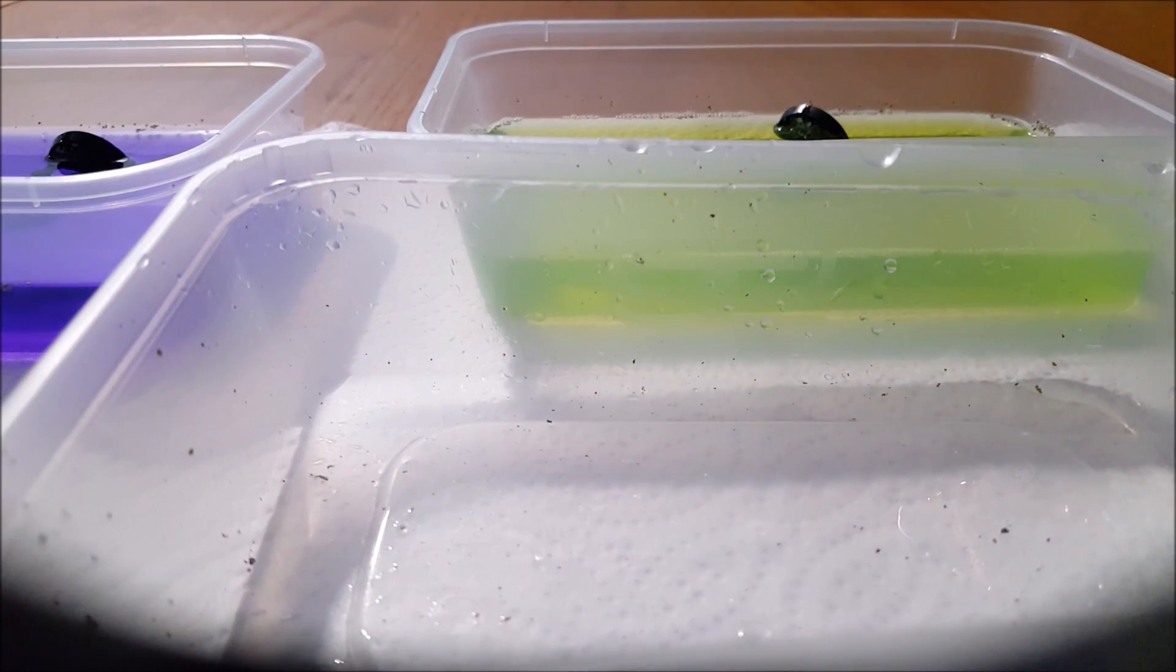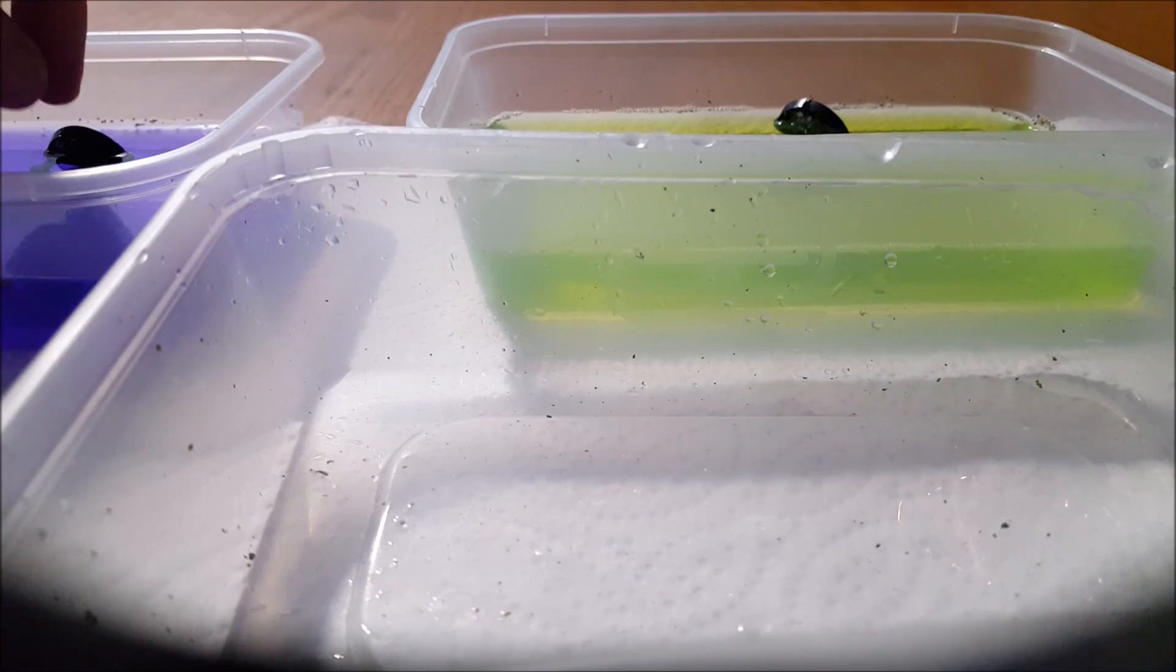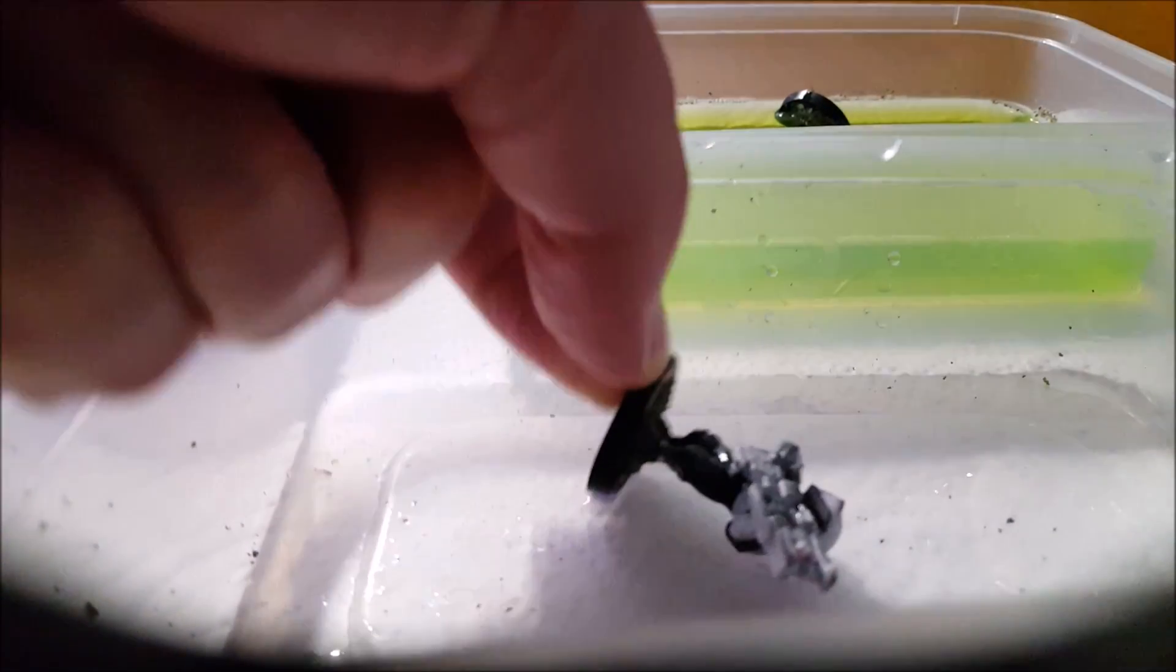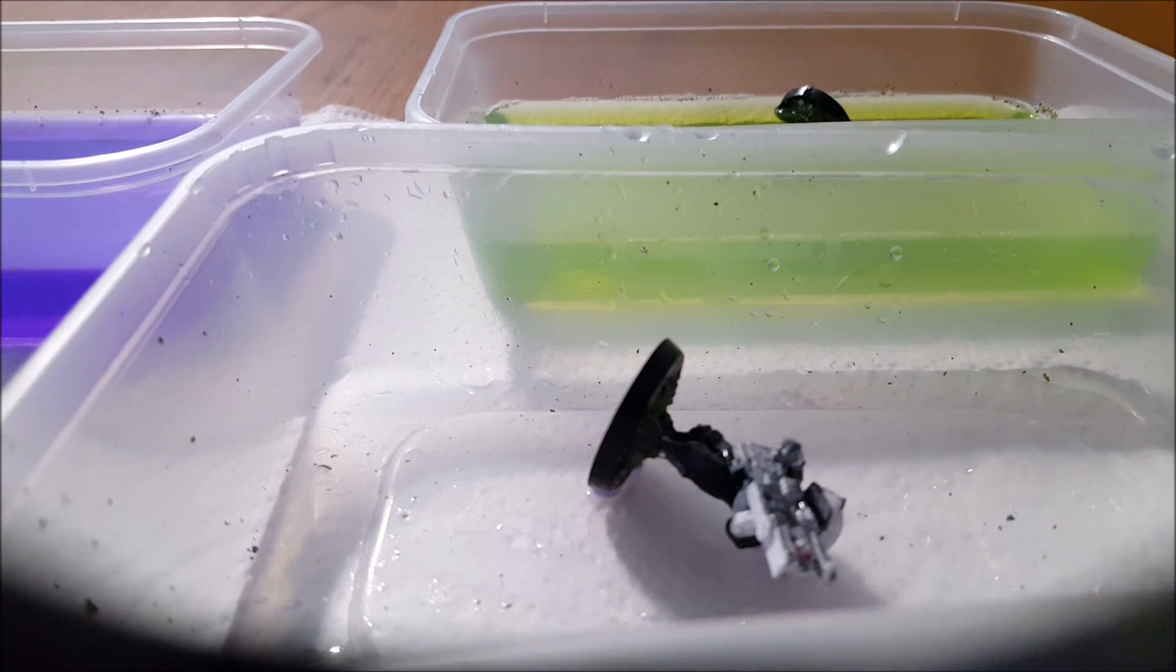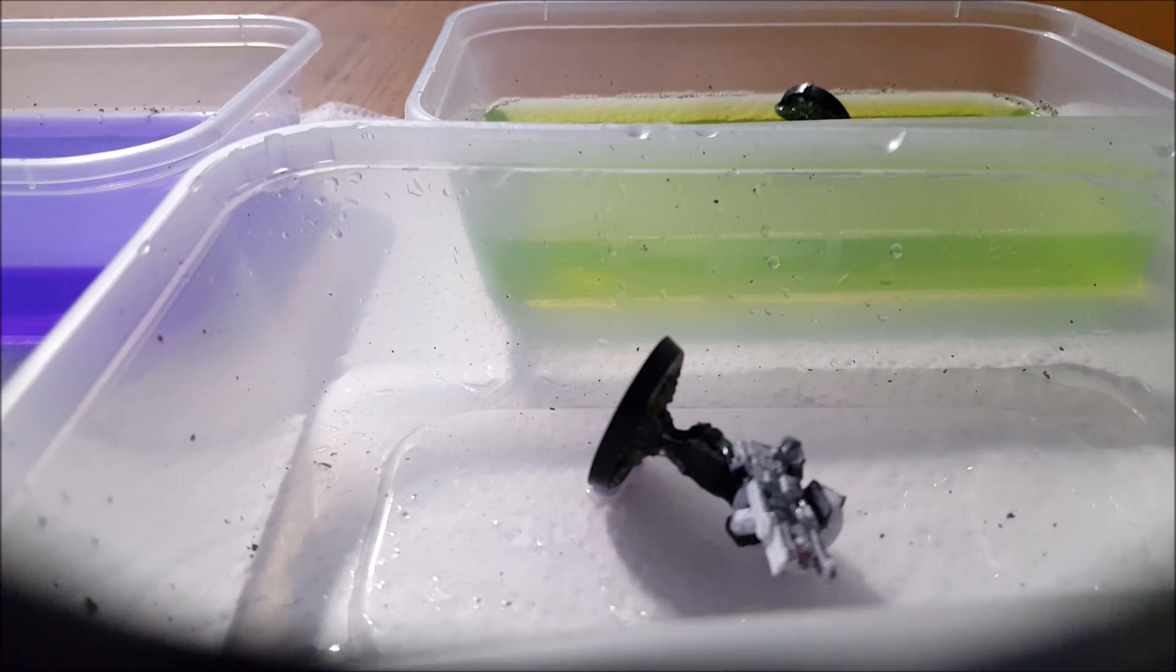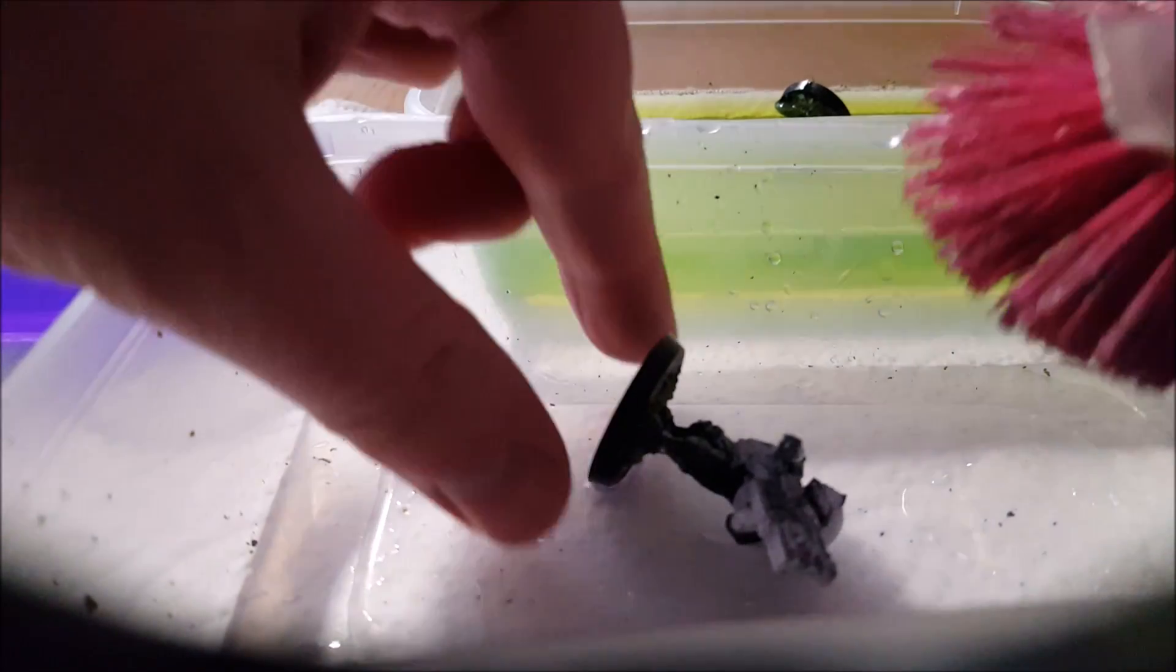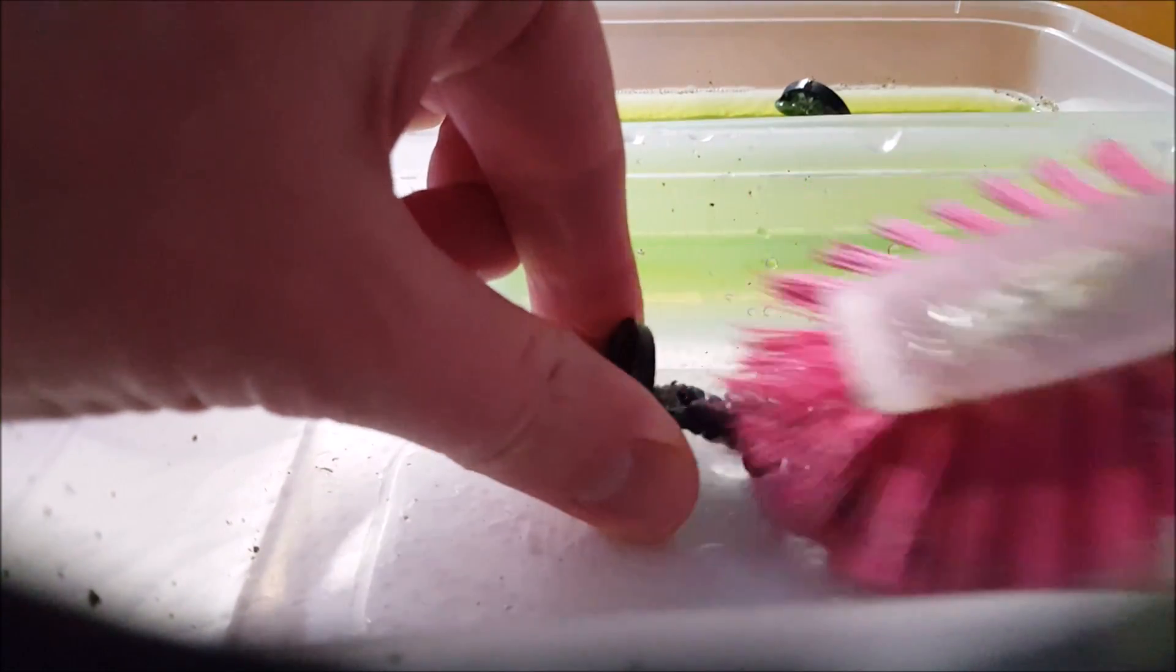As much as I'd like all the paint to fall off when it's in the chemicals, that really doesn't happen. So grab your miniature, get yourself an old or purchase yourself a new scrubbing brush and just grab hold of the miniature and give it a damn good scrub. Get in all the extra bits and pieces, get all that paint starting to come off.